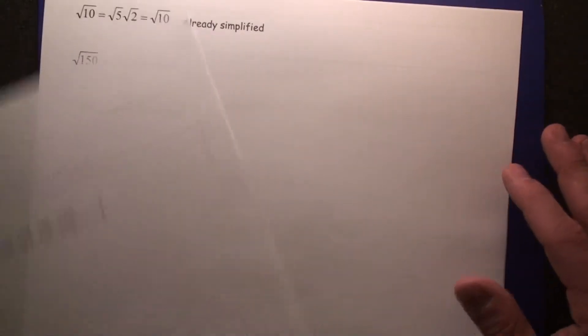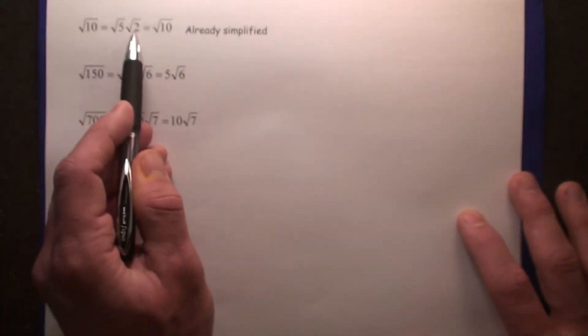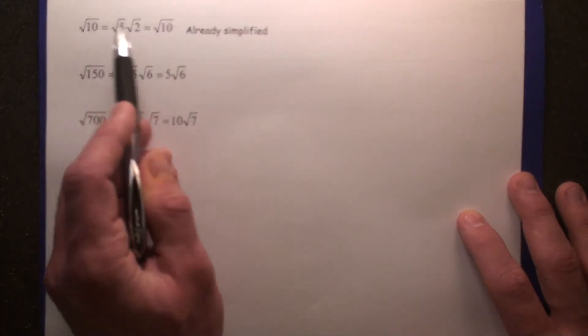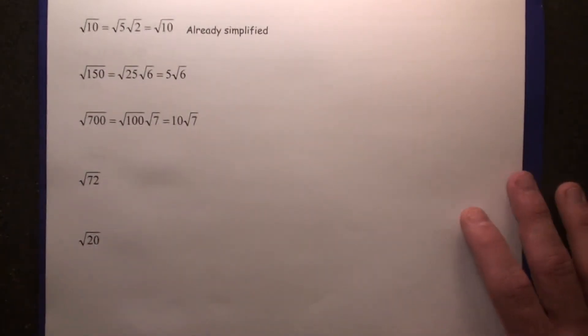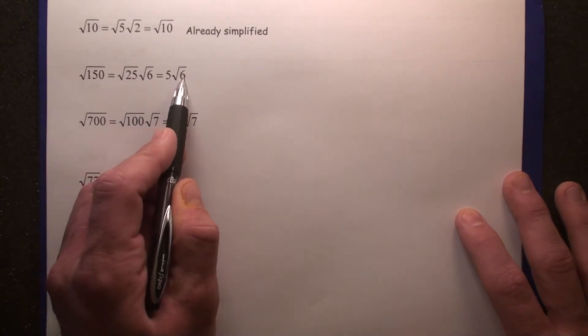Let's continue here. Square root of 10 is already simplified. Yes, square root of 10 does equal root 5, root 2, but neither of those are perfect squares. That's why you leave the answer as square root of 10. Square root of 150 equals root 25, root 6, which gives you 5 root 6.